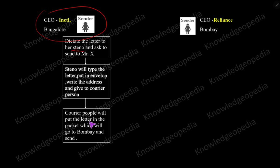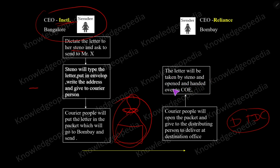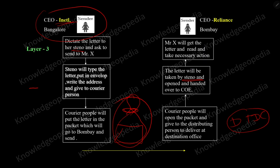The courier person will collect the letter from the Intel office, go to the DTDC courier office, and put the letter in the packet going to Mumbai. The courier person will not go to Mumbai directly. The DTDC courier person will go to the Reliance office and will not go directly to the CEO — he will give it to the office assistant. The Steno will receive the letter, open it, and hand it over to the Reliance CEO, Mr. X, who will read it. So the transfer of the letter from Intel Bangalore to Reliance Mumbai is done very smoothly.